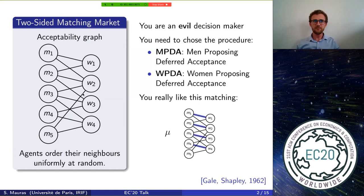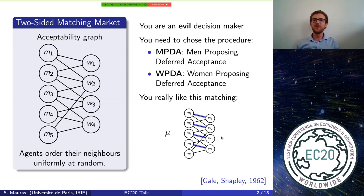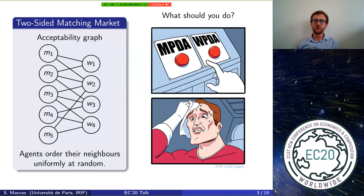Using this graph, agents order their neighbors uniformly at random and report this ordering as their preference list. This is a matching market, and you are an evil decision maker who needs to choose which procedure to use — either the men-proposing or the women-proposing deferred acceptance. Both procedures were defined by Gale and Shapley in 1962. The question is: what should you do if you want to maximize the probability that a particular matching mu is chosen?